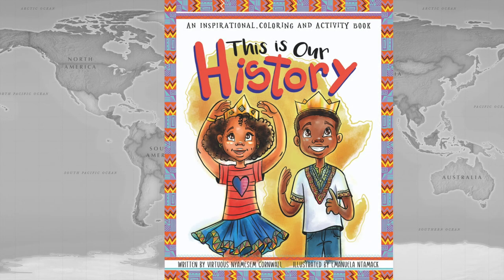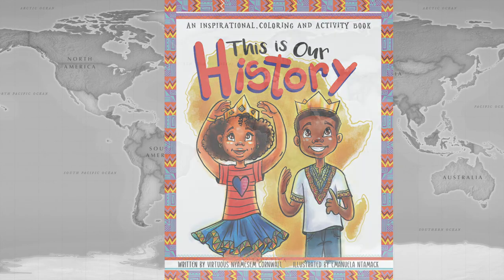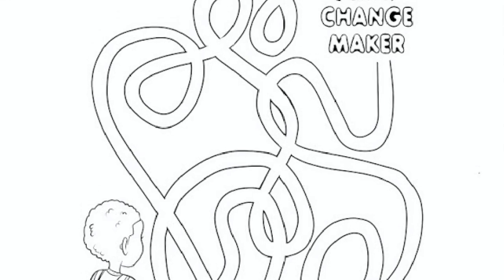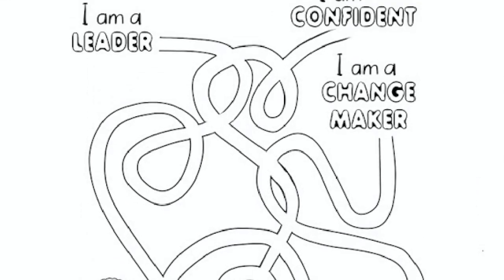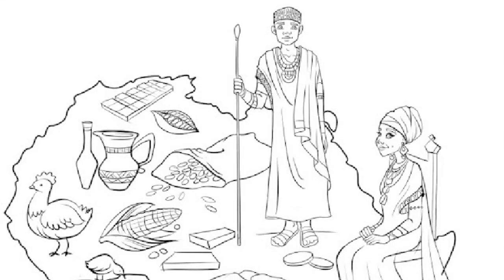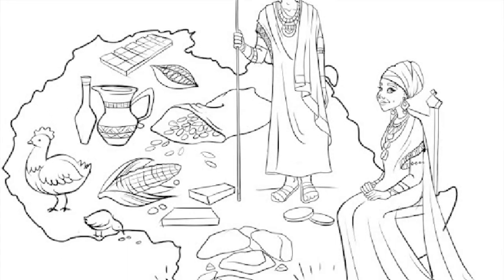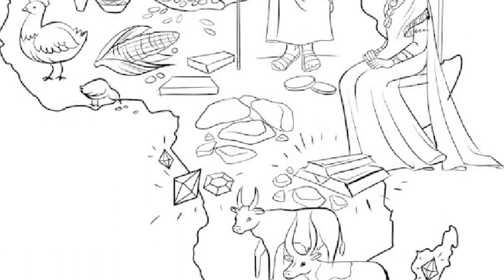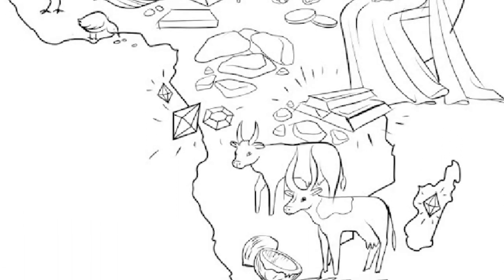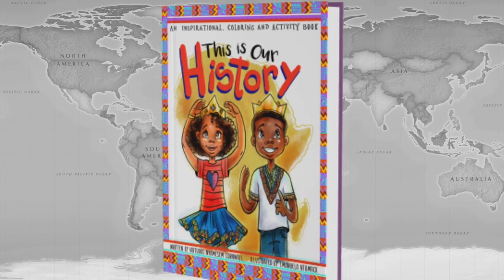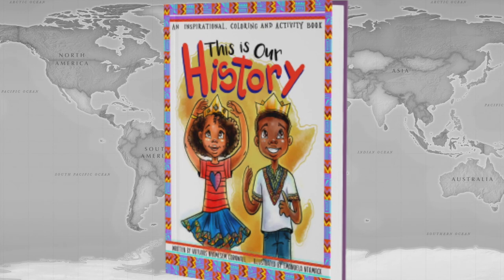This book is paired with an activity book that you can also purchase and that book reinforces the messages from our first book. It gives readers a chance to be creative and teach them all about things like Africa, how to draw the continent of Africa and it also has more positive affirmations that your child will just love. So this is a great book to use in a history class or workshop or it's just a great way to show kids who they are.